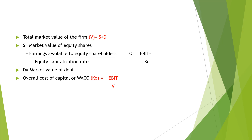According to the NI approach, the value of the firm V is equal to S plus D, where S is the market value of equity shares and D is the market value of debt (debentures). S equals earnings available to equity shareholders divided by the cost of equity (Ke). Earnings available to equity shareholders equal EBIT minus interest.